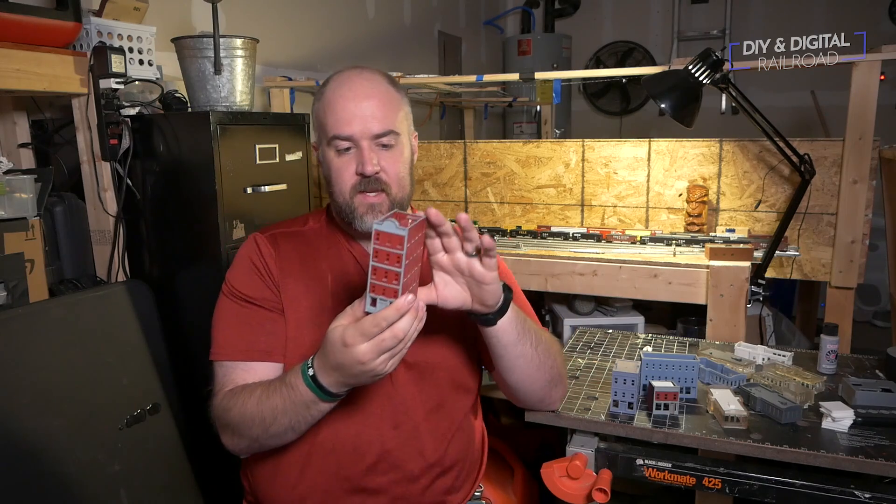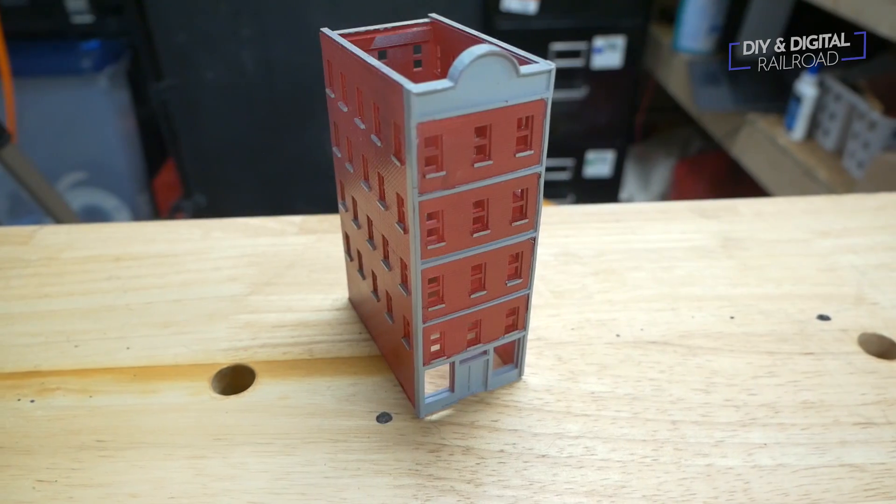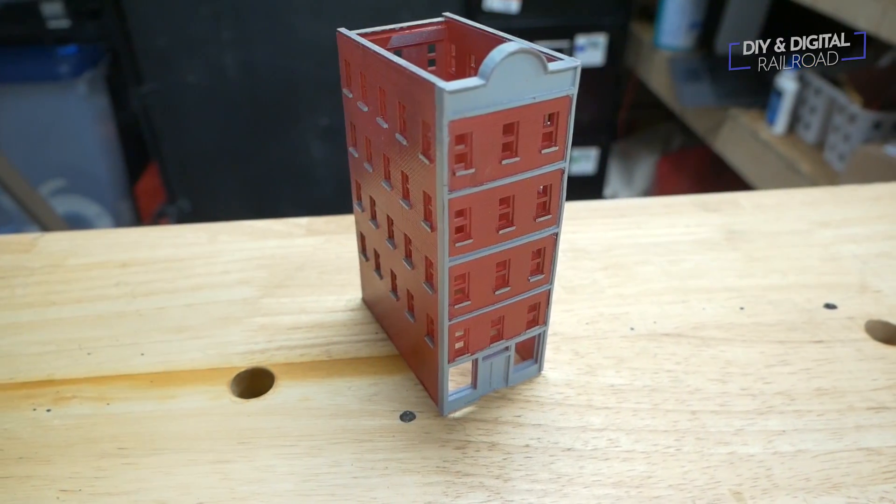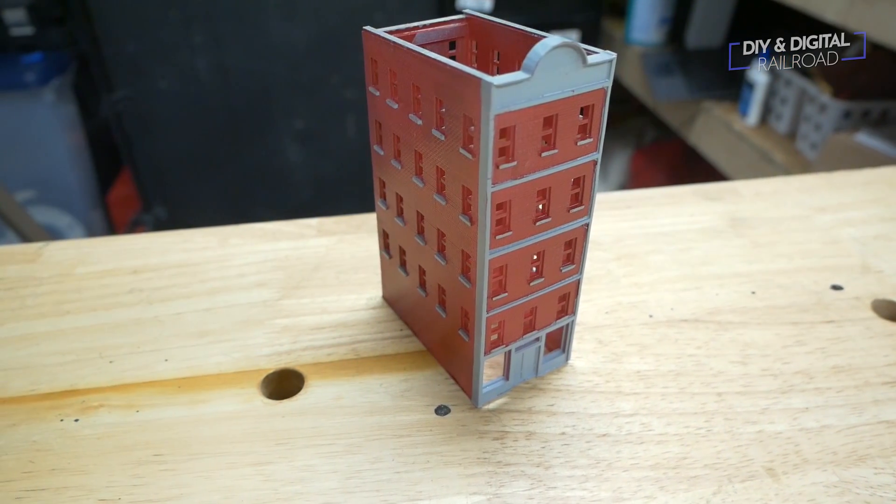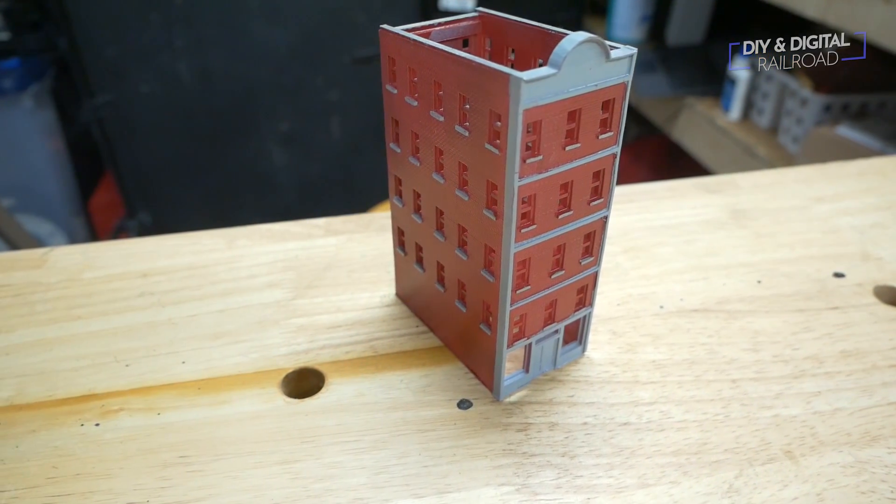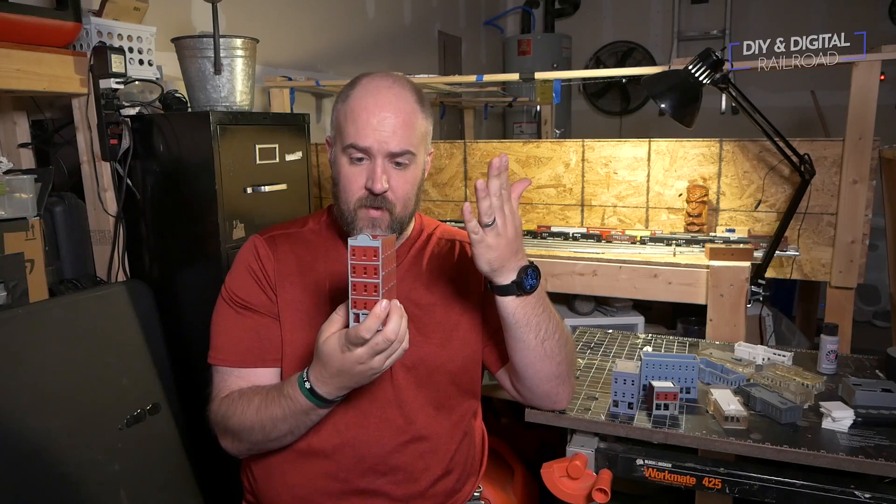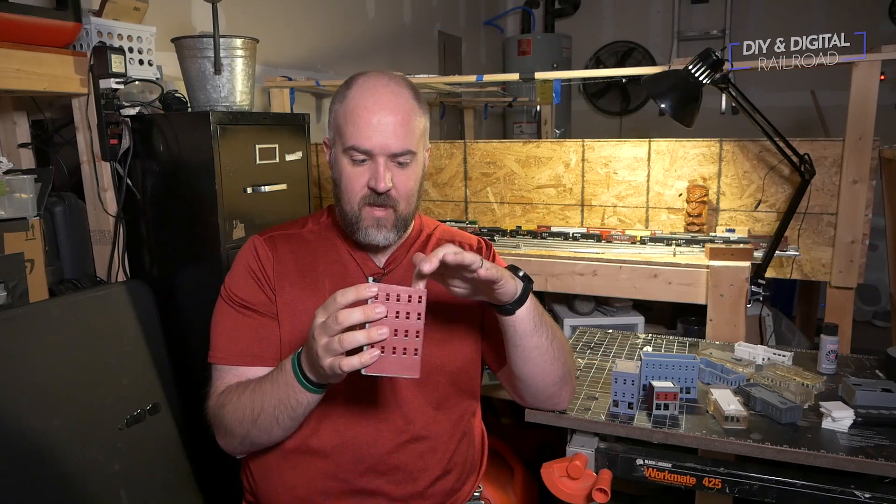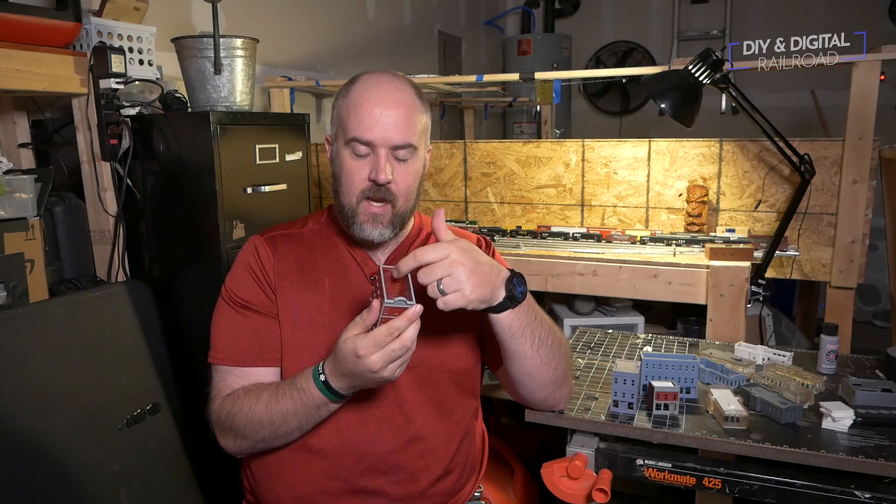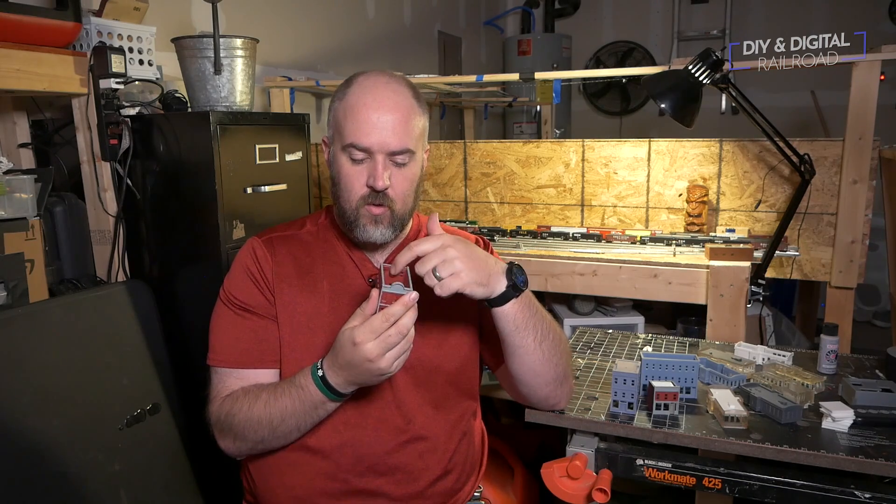And then building three is a five story building that can be an office building. It can be a bank. It can be an apartment building. These buildings are pretty open out there and it's got the, I haven't printed a roof for it, but it has the roof insert holders right there.